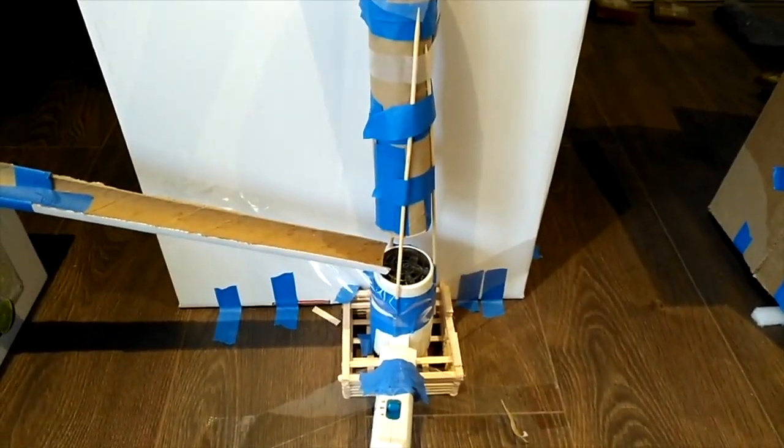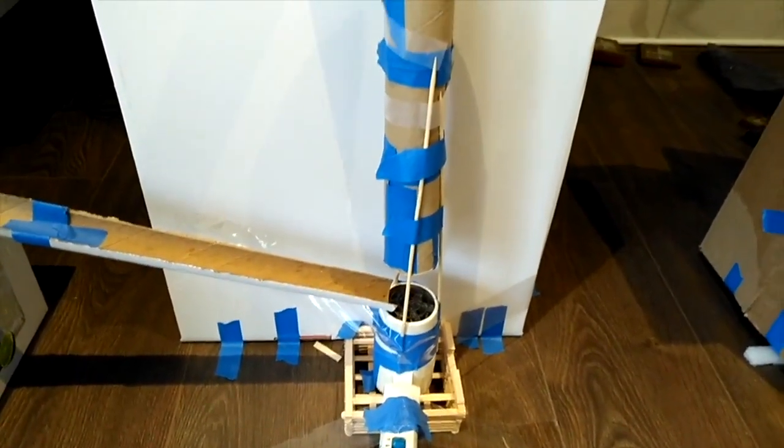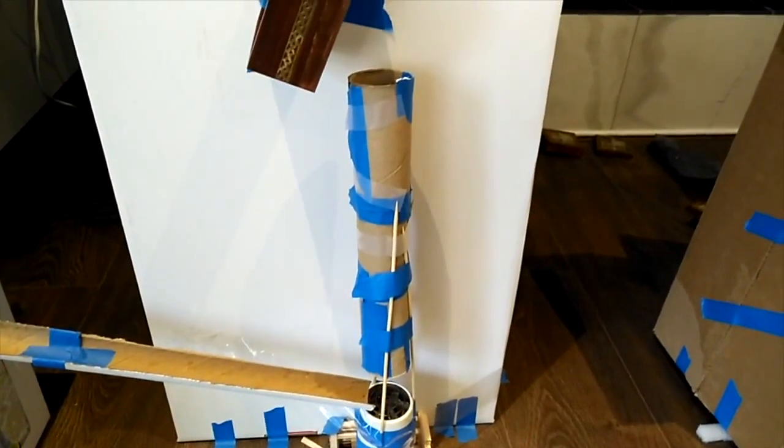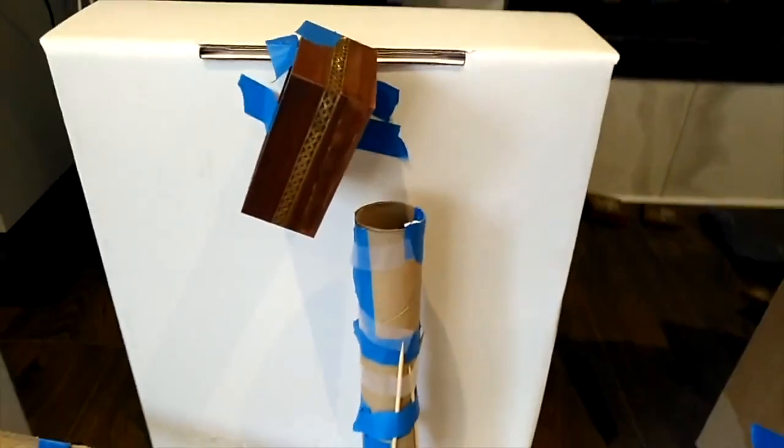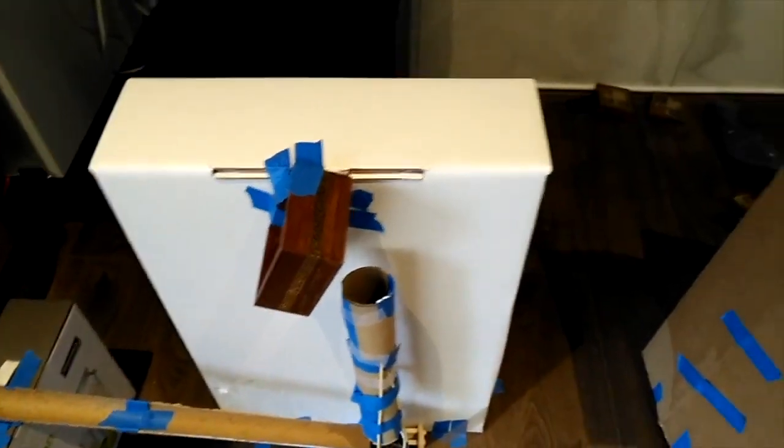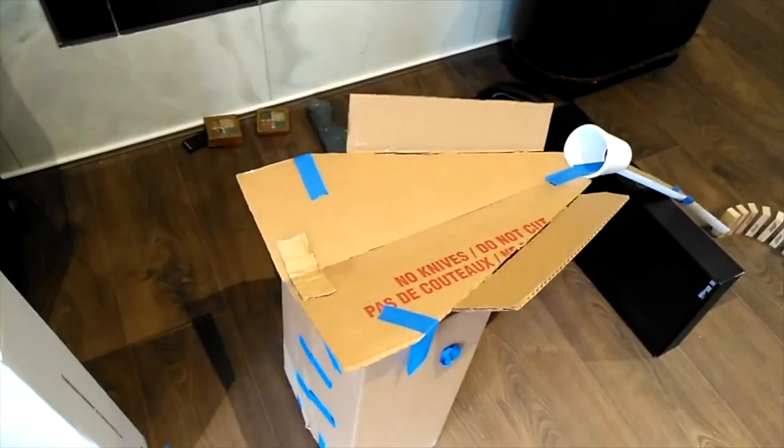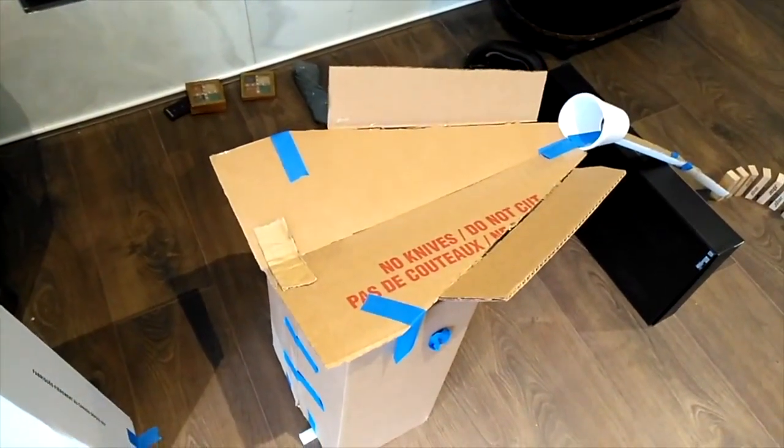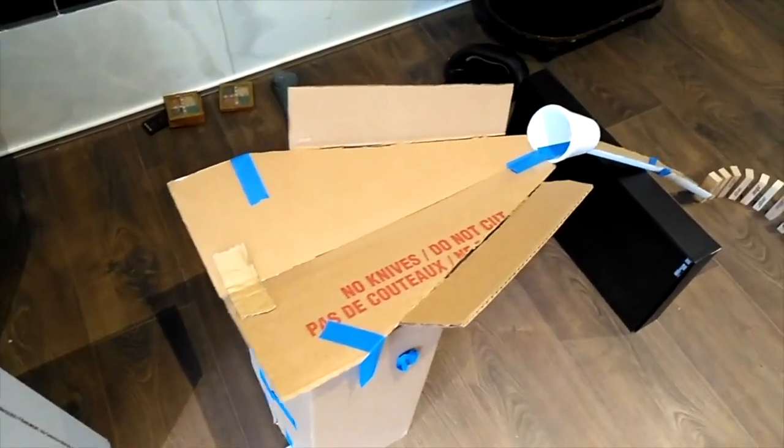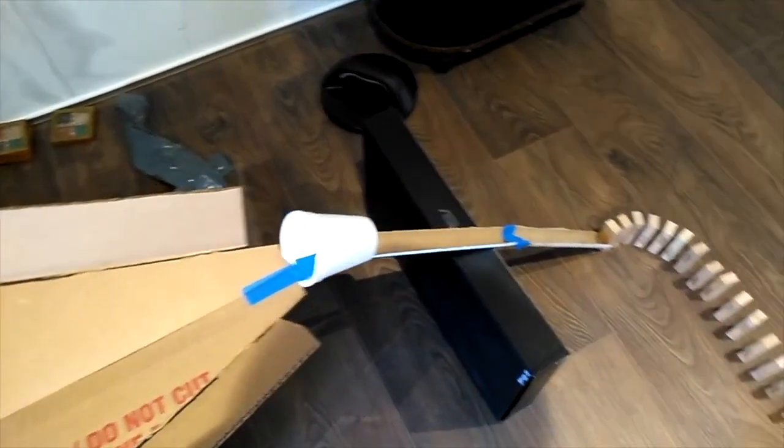So how we built this section is by taping skewers onto this hair dryer, which supports this modified paper towel roll, which leads to this wooden box that is taped onto this cardboard box. Then we have this cardboard box that we designed that funnels the ping pong into this styrofoam cup, allowing the ping pong to roll down this track.